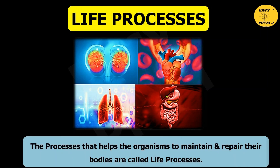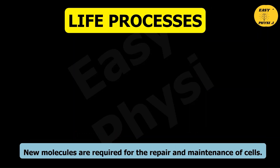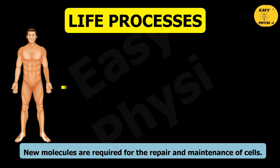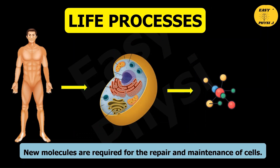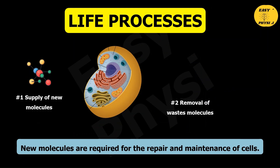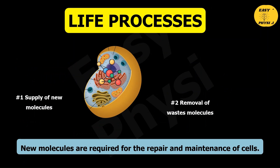Life Processes. The process that helps the organism to maintain and repair their bodies is called life processes. All living things are made up of cells, and cells are made up of molecules. To keep a cell alive, it needs to be maintained and repaired from time to time. For this repairing and maintenance, two things have to be done: first is supply of new molecules, and the second is removal of waste and unwanted material from the cells. These two tasks are achieved by life processes.